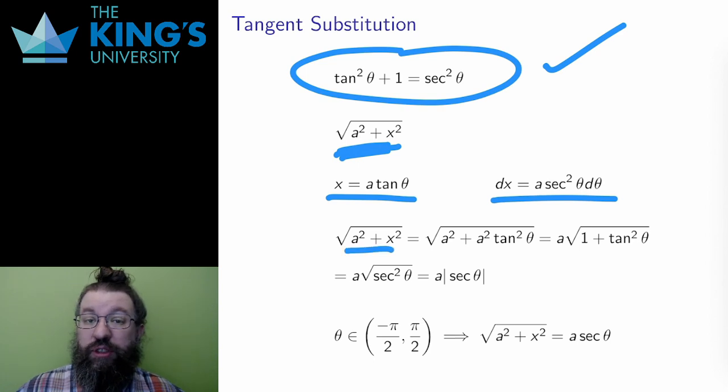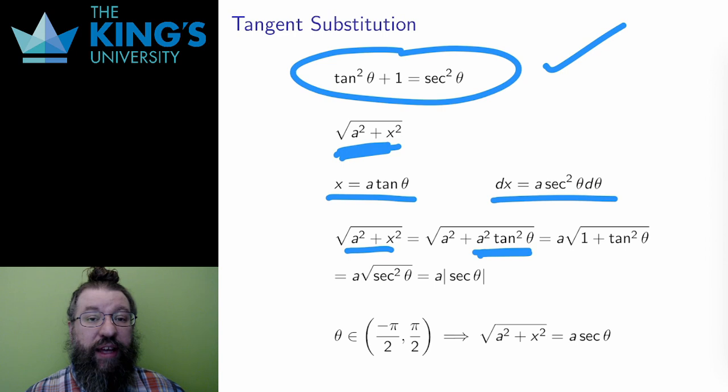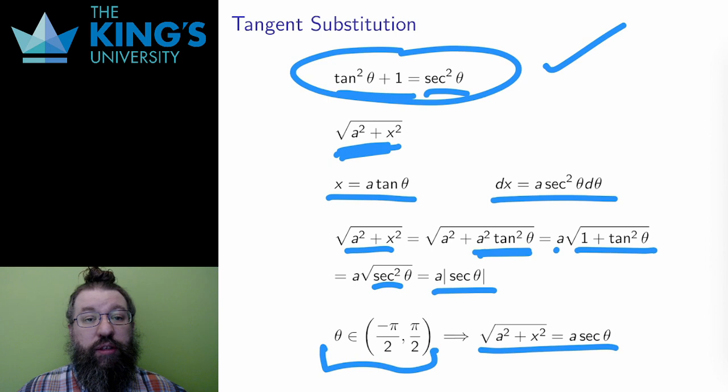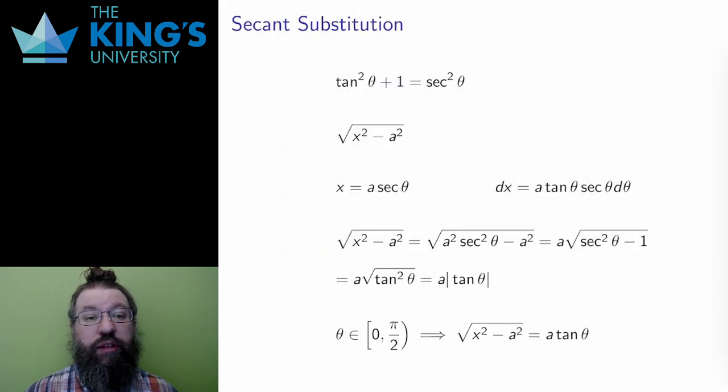So what happens to the square root here? Well, I replace x with a tan theta, and then factor out the a again. And then I use the identity to replace 1 plus tan squared theta with secant squared theta. And then I can cancel off the square root with a squared to give a times the absolute value of secant. And again, by restricting to the domain where secant is positive, I can drop the absolute value. Using the substitution, the square root is gone and has been turned into just a secant function.